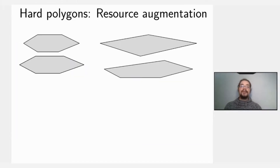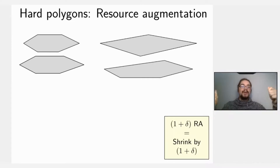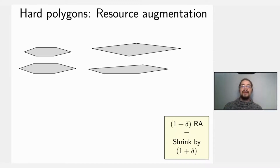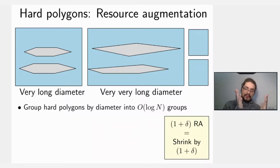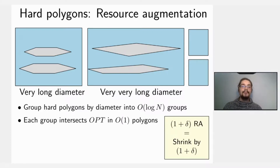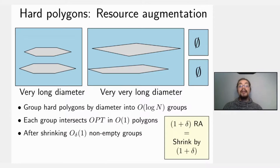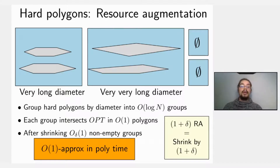In the resource augmentation setting, we stretch the knapsack by a factor of 1+δ, which equivalently means shrinking the polygons by 1+δ. We group hard polygons by diameter into logarithmically many groups. The key insight is that each group intersects the optimum in at most a constant number of polygons, and after shrinking, only a constant number of groups are non-empty. Therefore we can perform enumeration in polynomial time, achieving a constant approximation.